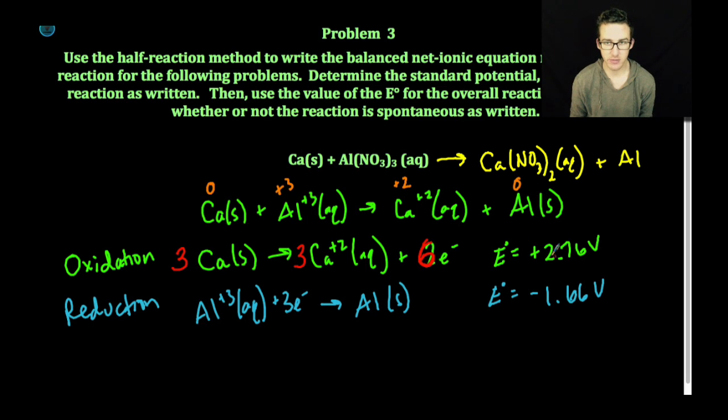Again, remember, we're not going to multiply our oxidation potential. And then I'm going to multiply my reduction potential by a factor of 2. Again, I'm doing this so that my number of moles of electrons gained equals my number of moles of electrons lost.